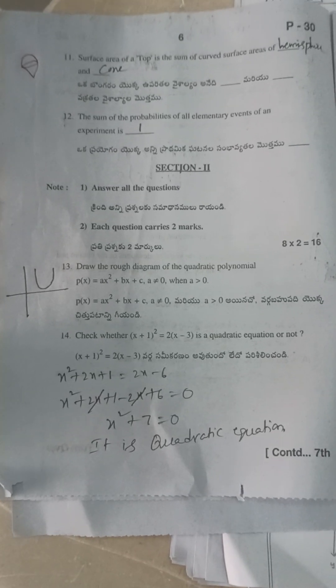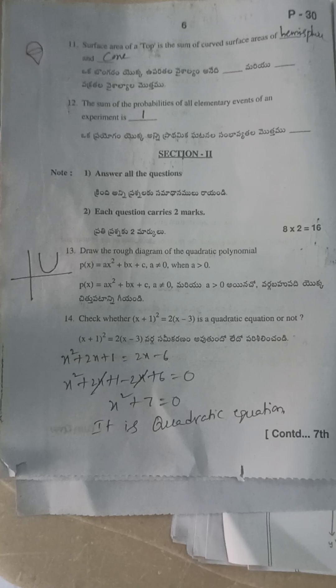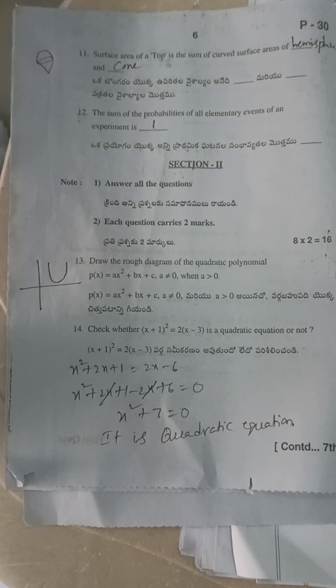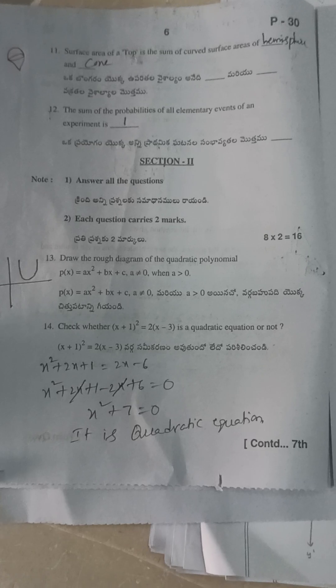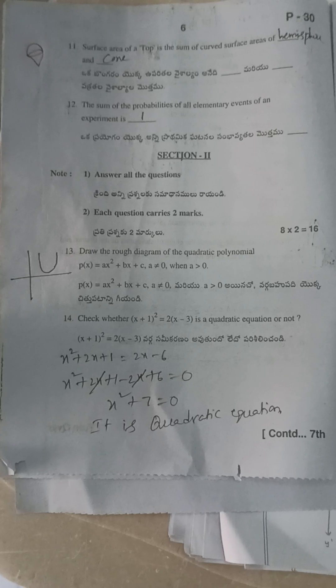Draw the diagram for the quadratic polynomial ax² + bx + c where a ≠ 0 and a > 0. Next, check whether (x + 1)² = 2(x − 3) is a quadratic equation or not — it is a quadratic equation. You can use the algebraic identity (a + b)² to simplify.